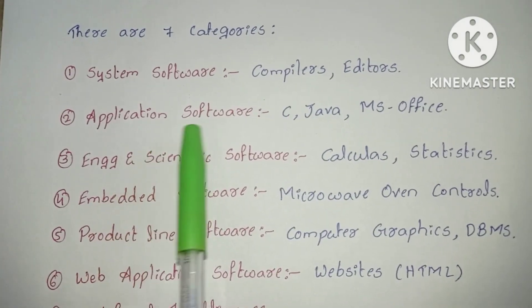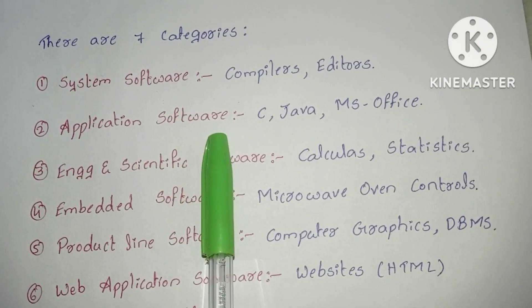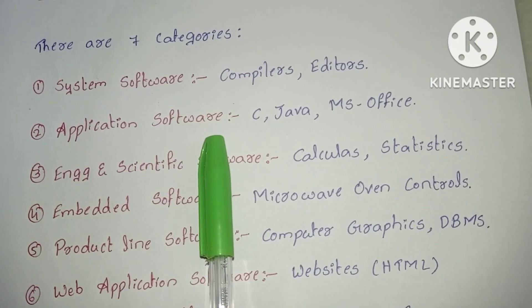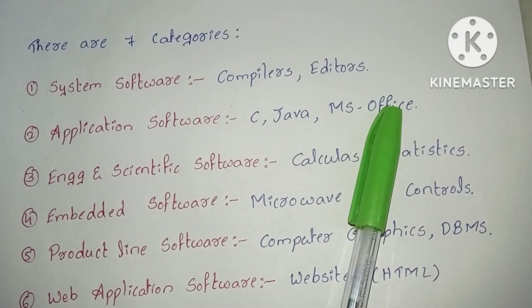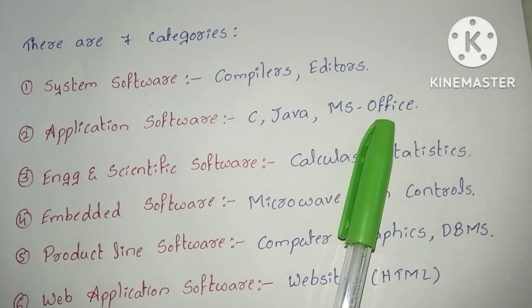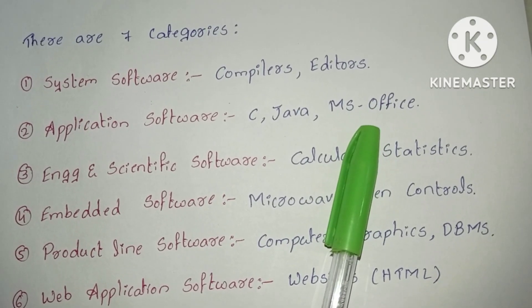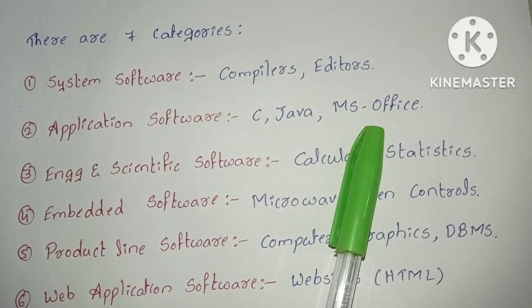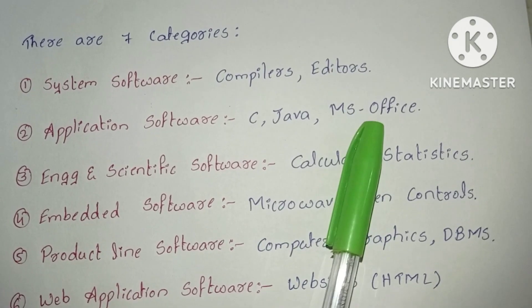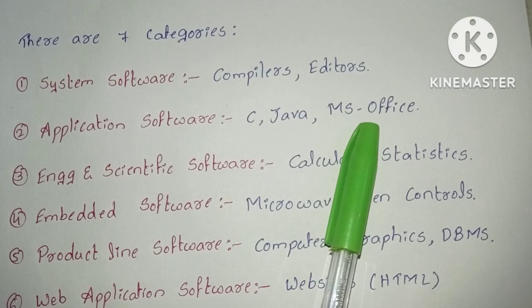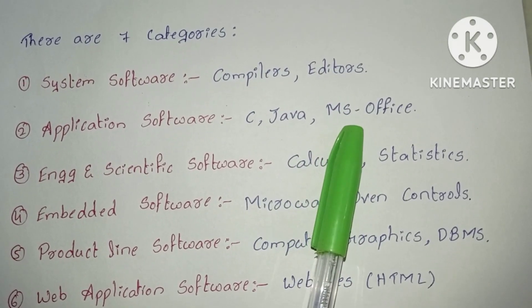Second is application software. Application software is particularly designed to help the user perform a specific task like C, Java, MS Office. In MS Office we have three categories: MS Word, PowerPoint and Excel. Word we use for documentation. In Excel we do calculations. Using PowerPoint we can create PPTs related to our data.